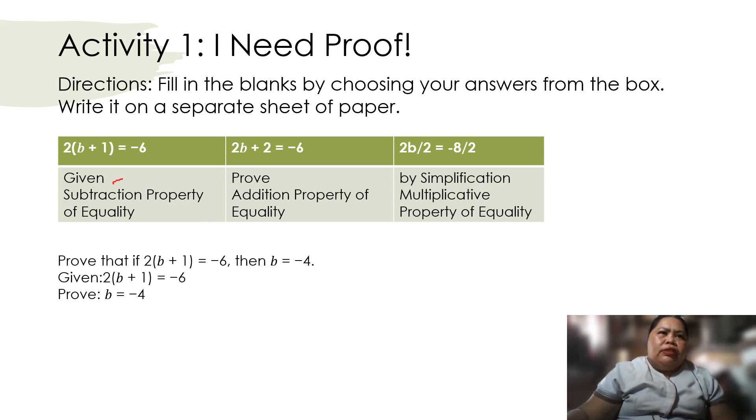The given: prove by simplification. Then we're going to use subtraction property of equality, and then addition property and multiplication property. Prove that 2 times the quantity b plus 1 minus x, then b is equal to negative 4. Given: 2 times b plus 1 is negative 6. We have here b equals to 4, prove that b equals 4.